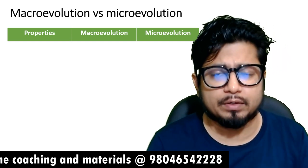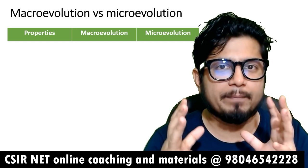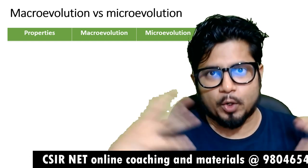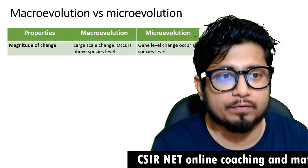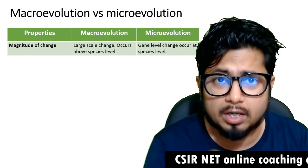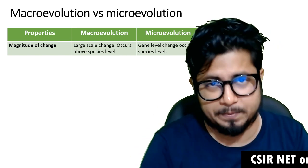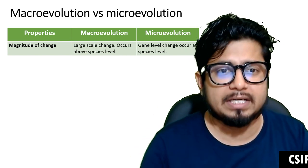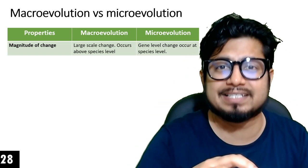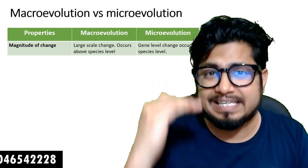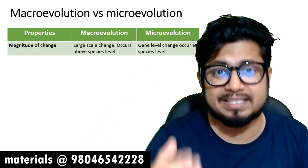As the name suggests, microevolution works in a very miniature scale — small level, genetic level — while macroevolution is in a broader scale. The very first thing is magnitude of change. The magnitude of change for macroevolution is a large scale change that occurs above the species level, so the change is observed between species. Microevolution is where the change is only at the gene level, and the process is understood across multiple generations but within a single species.